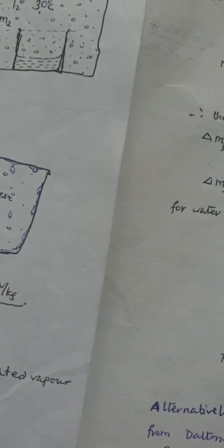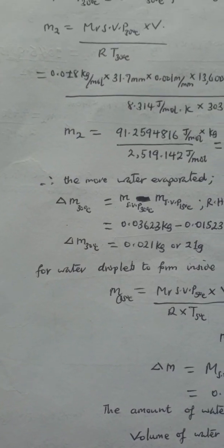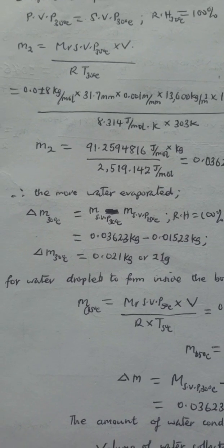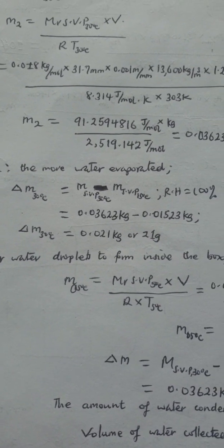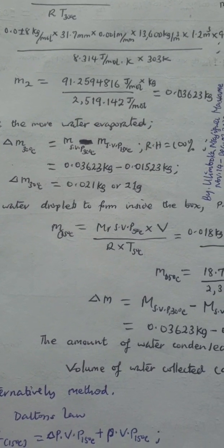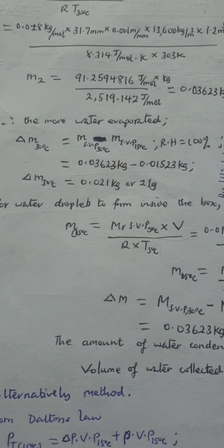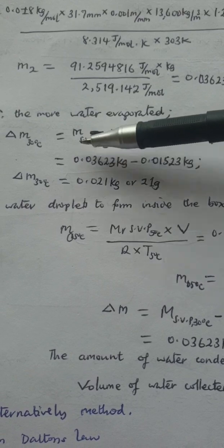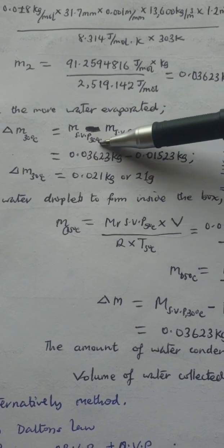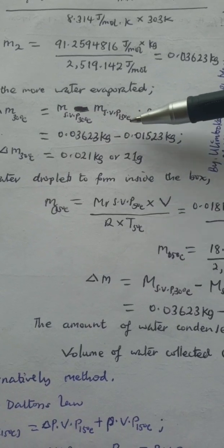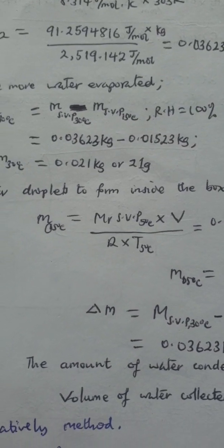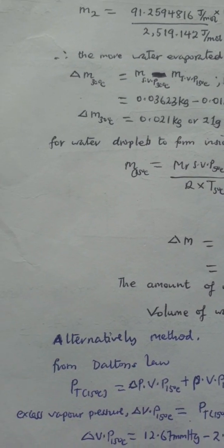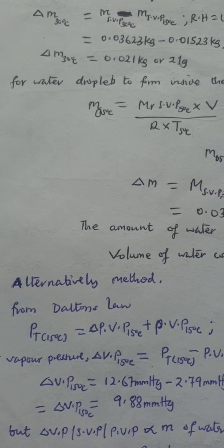For Roman II, when the temperature is raised to 30 degrees Celsius, the excess mass — the mass that evaporates — will be equal to the mass that saturates at 30 degrees Celsius minus the mass that saturates at 15 degrees Celsius. This mass is equal to 0.021 kilograms or 21 grams.